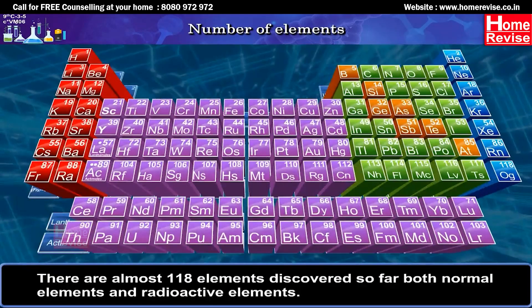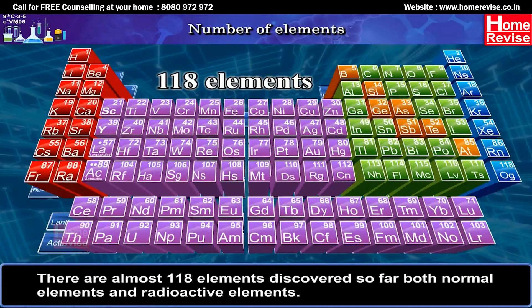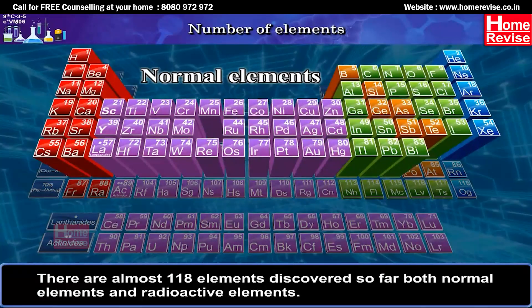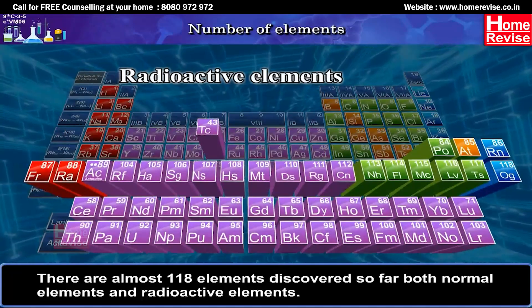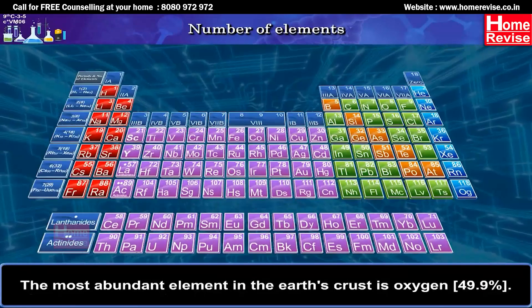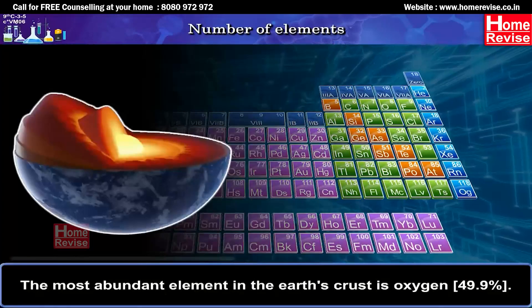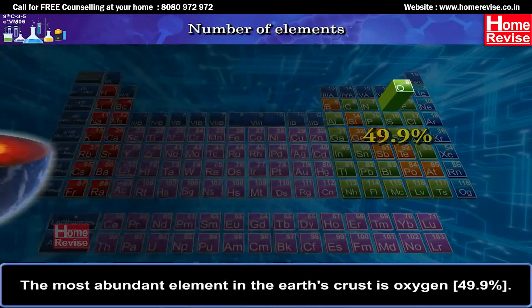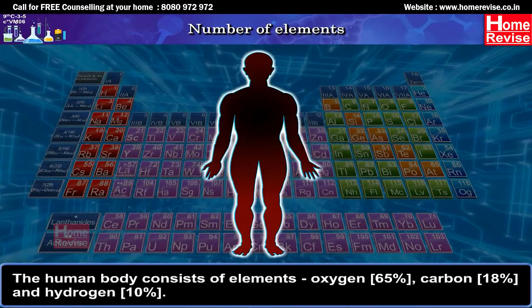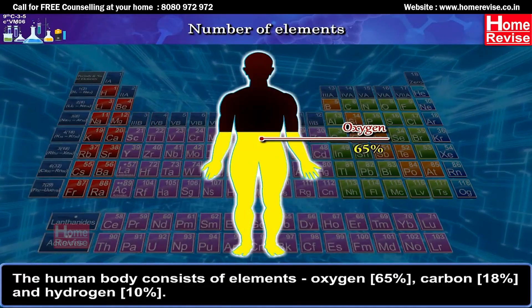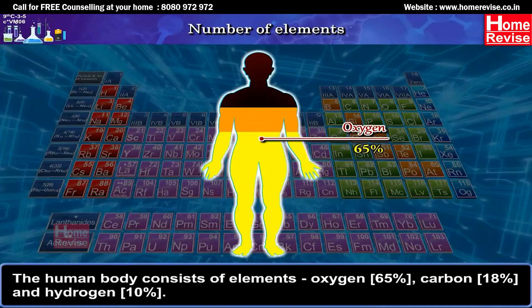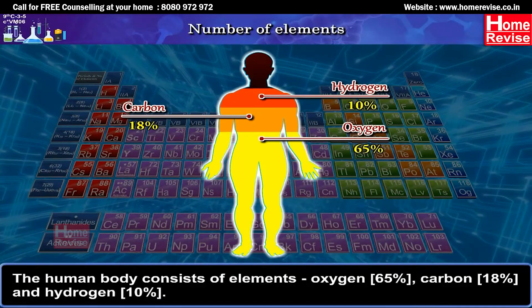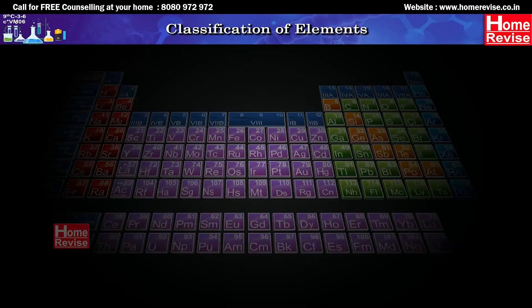There are almost 118 elements discovered so far, both normal elements and radioactive elements. The most abundant element in the earth's crust is oxygen, at 49.9%. The human body consists of elements: oxygen at 65%, carbon at 18%, and hydrogen at 10%. Classification of elements: Elements are categorized into metals, non-metals, metalloids, and noble gases.